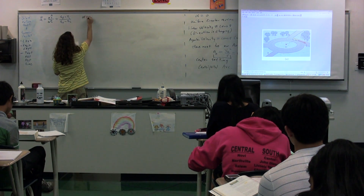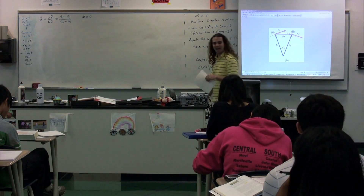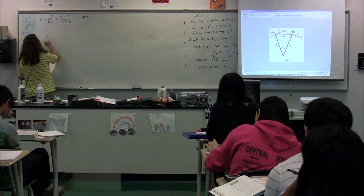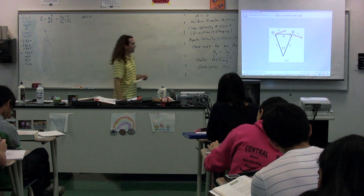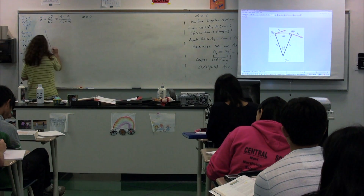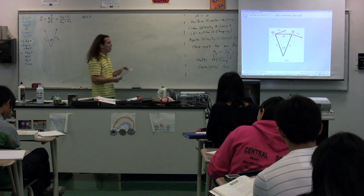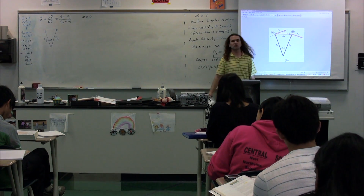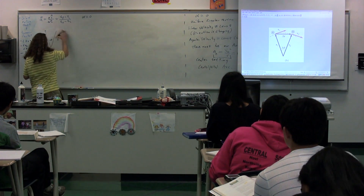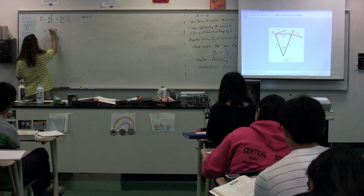Remember, we're assuming the angular acceleration is equal to zero, and we have some vectors here. At one particular point in time, we have the position initial — when the object is located right there. Then, a short while later, position final is right here. When it's gone from position initial to position final, it's gone through some change in theta, some angular displacement. It has also gone through a linear displacement — that linear displacement is this vector right here, delta r.